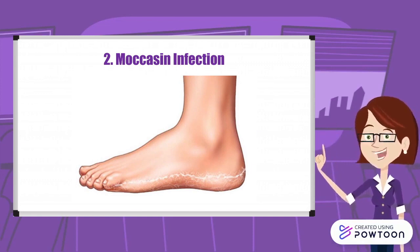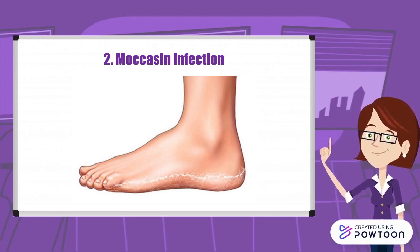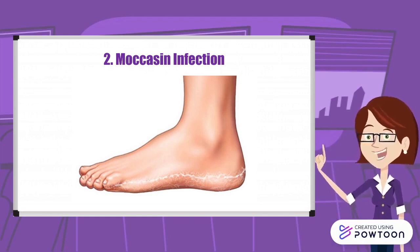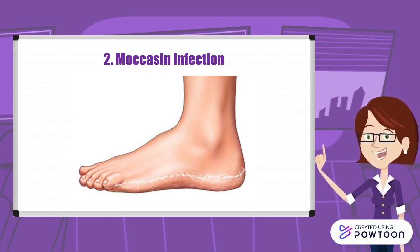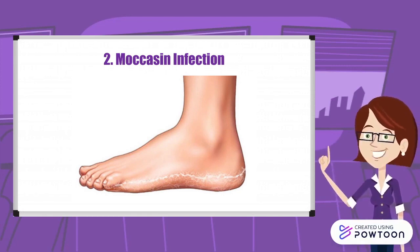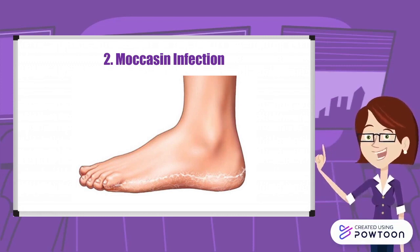The second type of athlete's foot is moccasin infection. This is an infection of the sole of the foot. A rash may also develop along the sole up to the side of the foot. A foot with moccasin infection will appear dry with cracked and peeled skin.